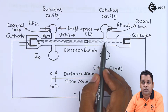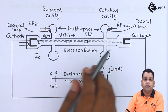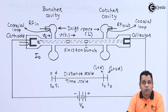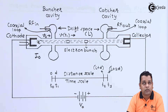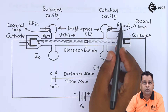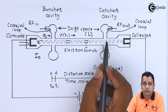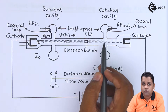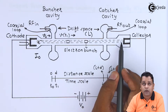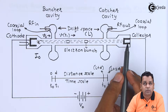Now the electron bunch has reached the gap spacing between the grids of the catcher cavity. The phase of the catcher cavity should be in the retarding phase so that there is efficient amplification. At the time of the retarding phase, there will be conversion of kinetic energy of the electron bunch to potential energy given to the grids of the catcher cavity, so that the amplified output can be taken. The electrons that have given up their complete energy will be left with an energy deficiency and finally be collected by the electrode at positive potential, named as the collector.